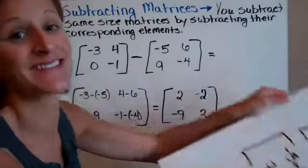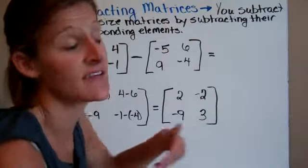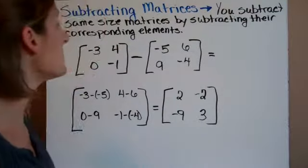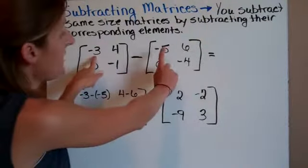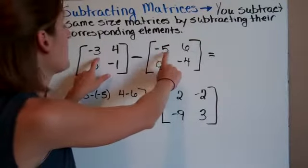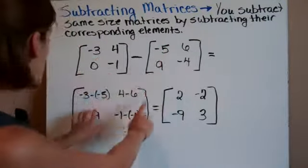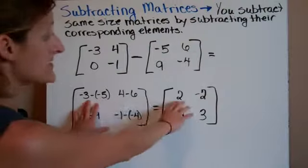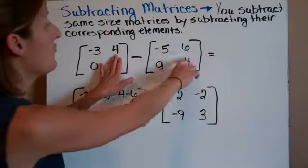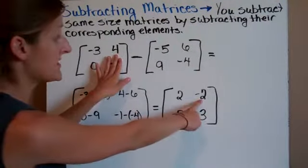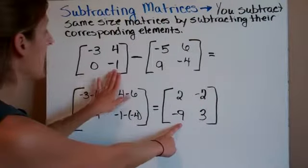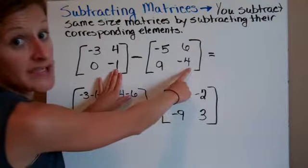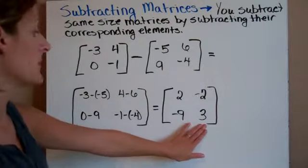When we are subtracting, it's the same way, except I subtract instead of add it. I have these two matrices that I'd like to find the difference between. I'm going to do negative 3 minus negative 5, right here, that's going to be 2. Then do 4 minus 6, that's negative 2. 0 minus 9, that's negative 9. And negative 1 minus negative 4 is going to be a positive 3.